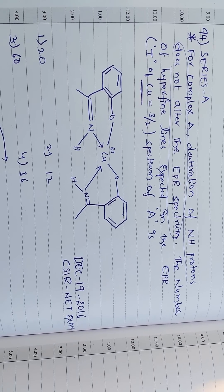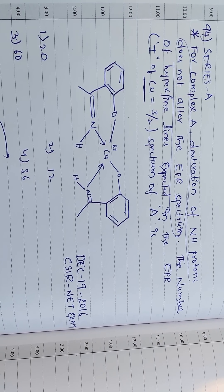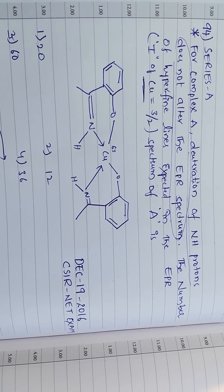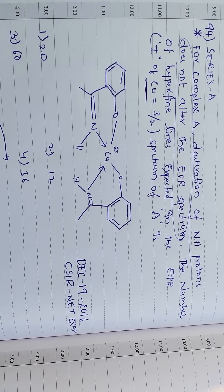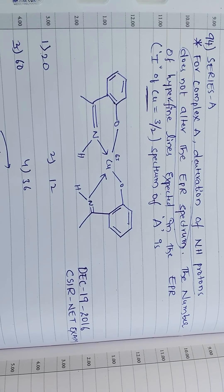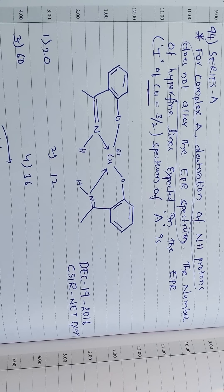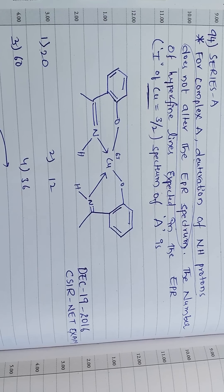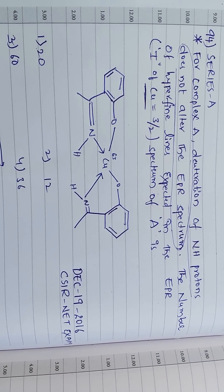For complex A, deuteration of NH protons doesn't alter the EPR spectrum. The number of hyperfine lines expected in the EPR spectrum of A is — given that I of copper equals 3/2. The given options are: 1) 20, 2) 12, 3) 60, 4) 36.